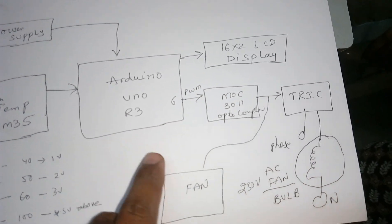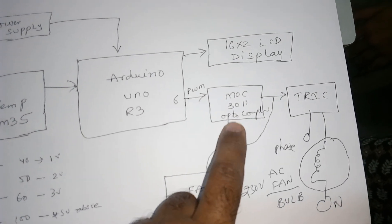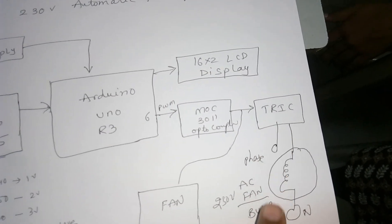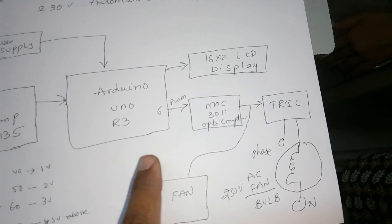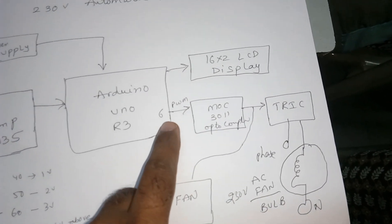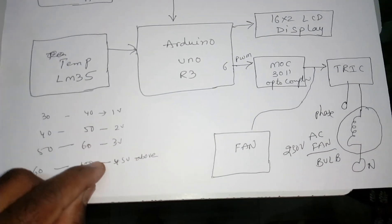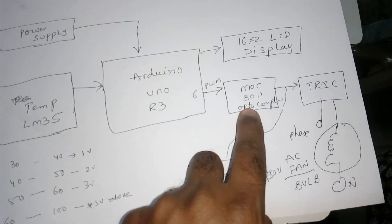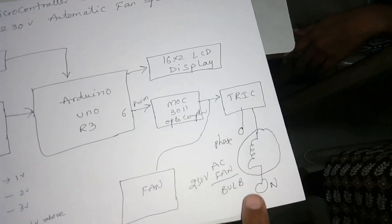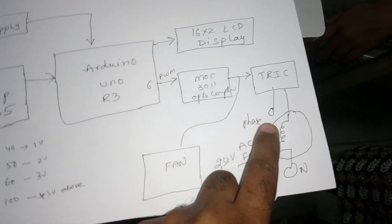We are going to control the 230-volt fan using the MOC3011 optocoupler and a triac circuit. The triac is mainly used for operating AC appliances. We control the AC fan speed using the Arduino board with PWM technique — generating differential voltages, giving input to the MOC3011, and the output goes to the triac IC to control the motor.